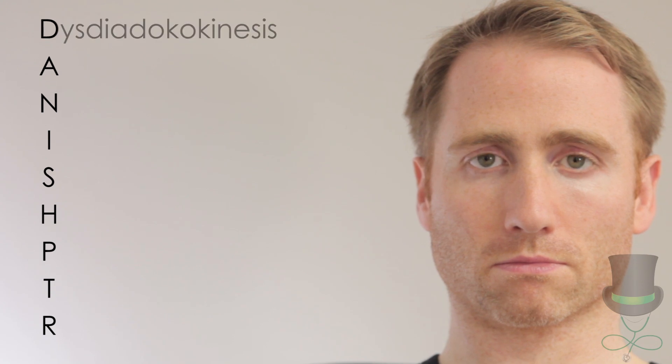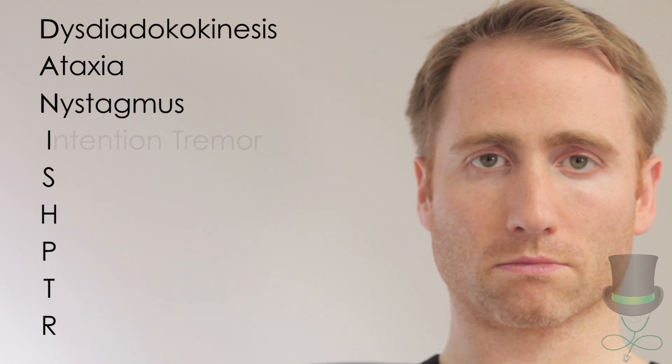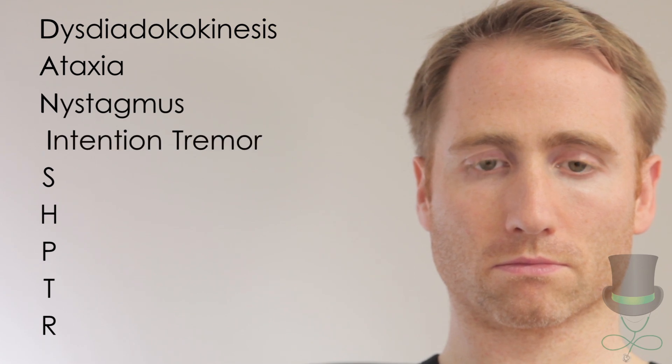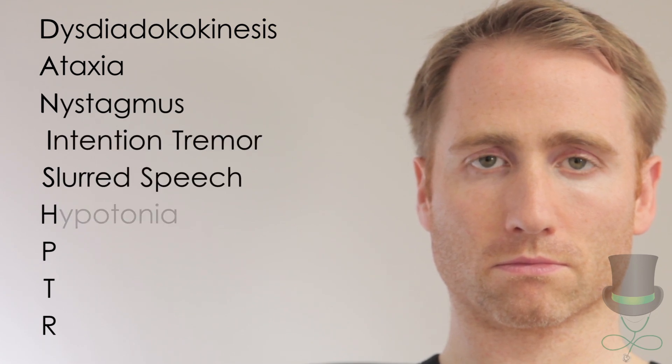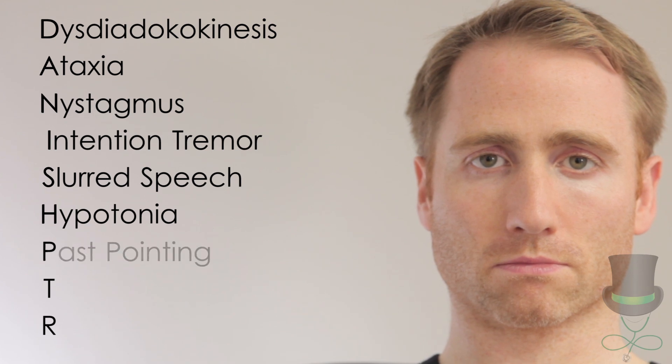The signs of cerebellar disease can be summarised with the mnemonic DANISH PASTRY: D for dysdiadochokinesis, A for ataxia, N for nystagmus, I for intention tremor, S for slurred speech, H for hypotonia, P for past pointing, T for tremor, R for rebound. In practice, it is more efficient to test these in a different order, starting with the hands.